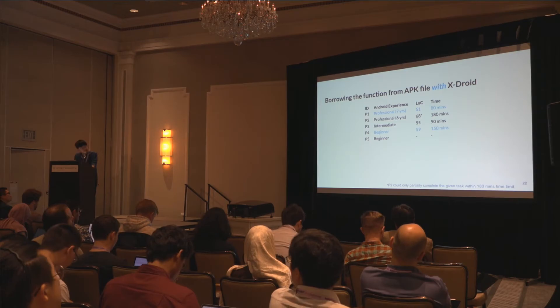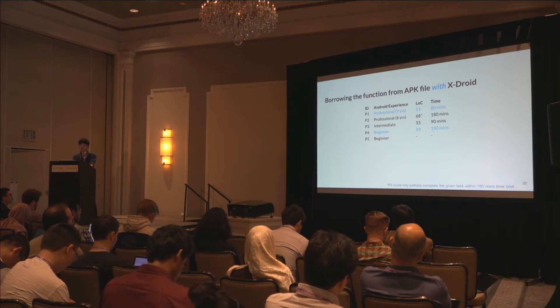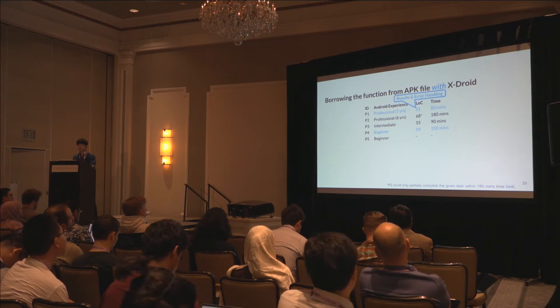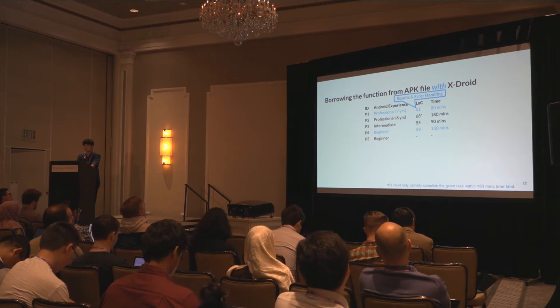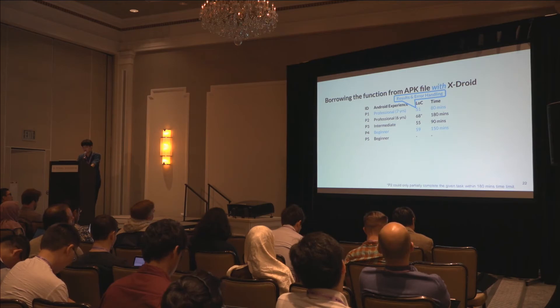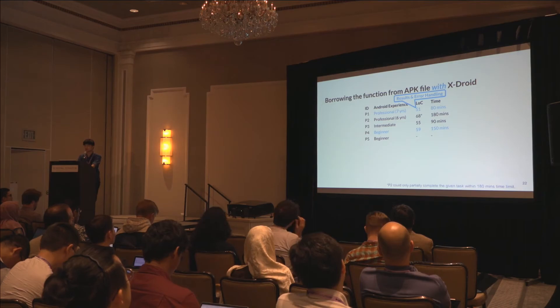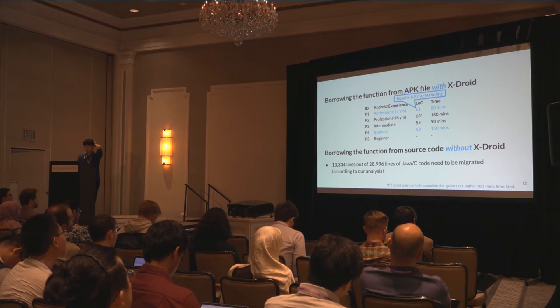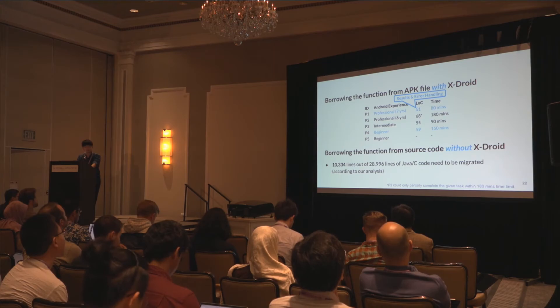Here are the results. One participant accomplished the task by writing only 51 lines of code for retrieving results and handling errors, within only 80 minutes — their first time using CrossDroid. Notably, one beginner-level developer, a CS undergraduate student, also accomplished the task writing only 51 lines of code within 150 minutes. To compare how difficult this task would be without CrossDroid: we analyzed the KeyPassDroid source code and found that more than 10,000 lines of code would have to be migrated. This clearly demonstrates how usable and useful CrossDroid is.